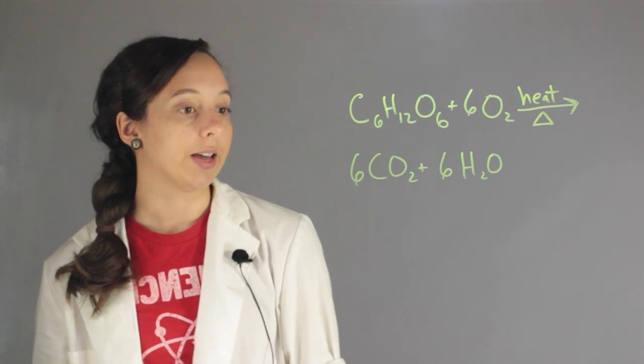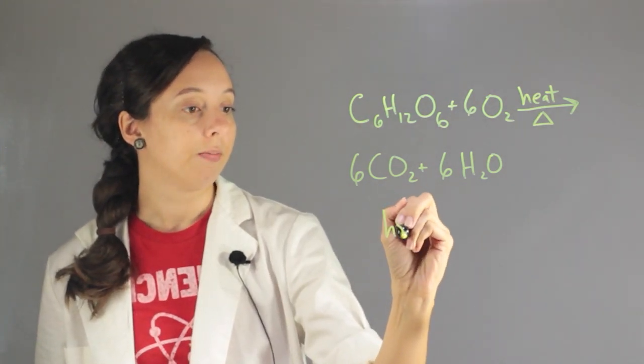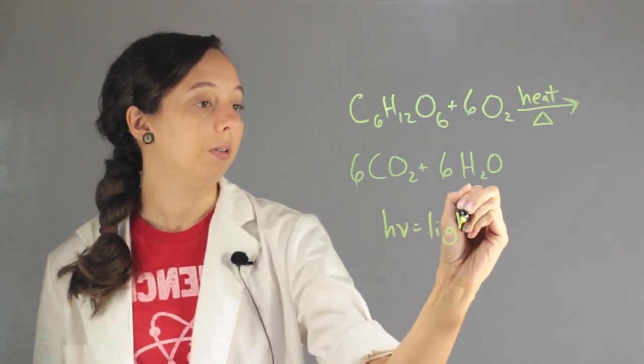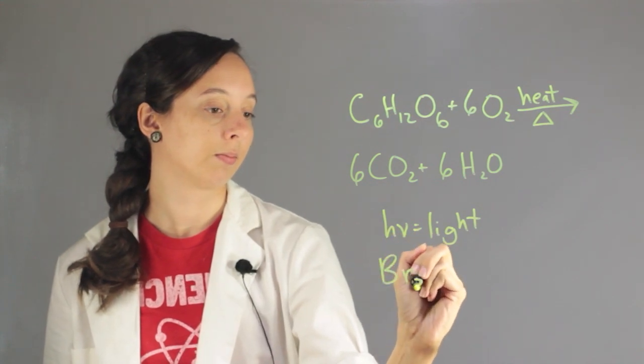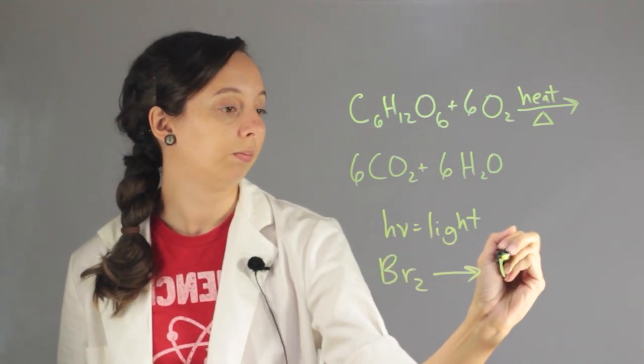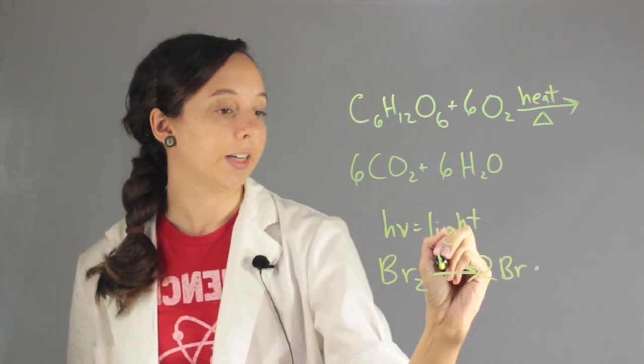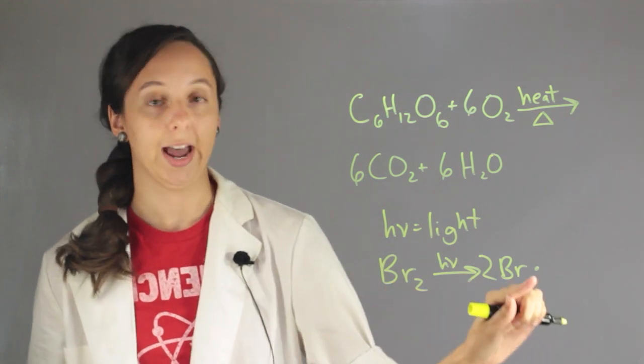And so, another thing that chemists like to do is, in other reactions, use hν, and this means light. So, if you ever see something like this, and it has hν on here, it means that you had to shine light before this reaction happened.